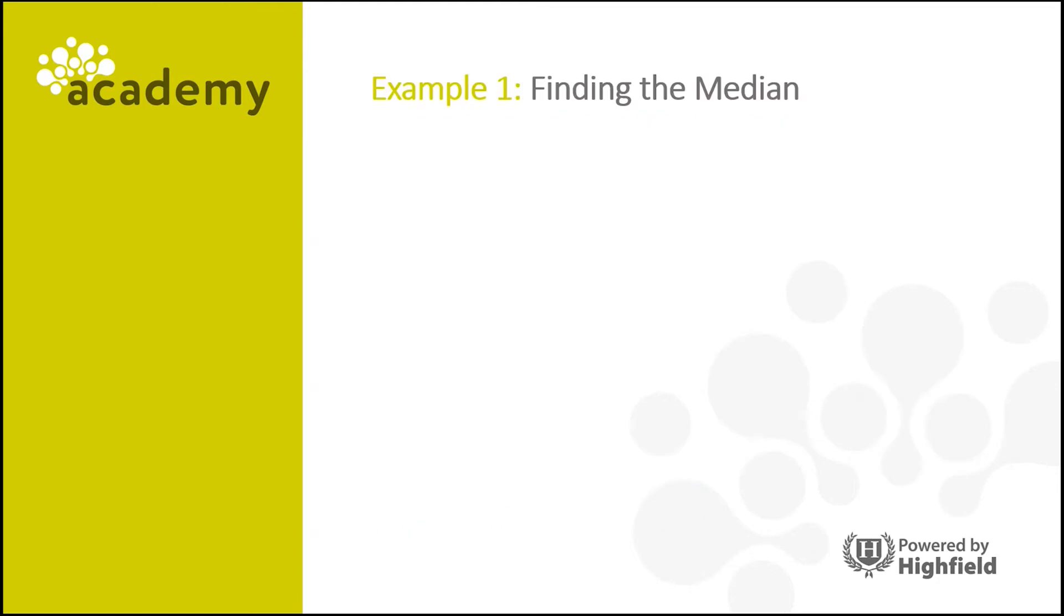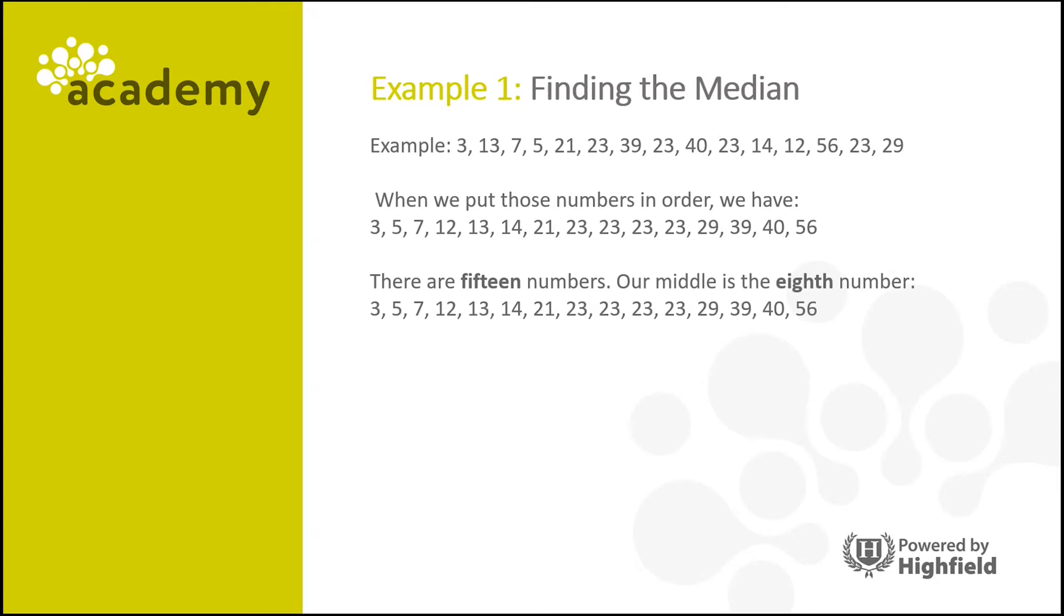Let's look at an example of finding the median. So here's your data set and when we put the numbers in order, this is what we have. Now there are 15 numbers in total, so our middle number is the 8th number in the set of values. In this instance, the median is the number 23.